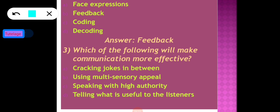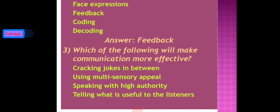The third question: which of the following will make communication more effective? Options are: cracking jokes in between, using multi-sensory appeal, speaking with high authority, and telling what is useful to the listeners. Cracking jokes, speaking with high authority, and telling what is useful are not effective communication methods. The correct answer is option B — using multi-sensory appeal — as it is one of the best ways for effective communication.